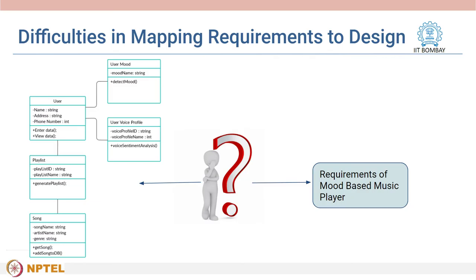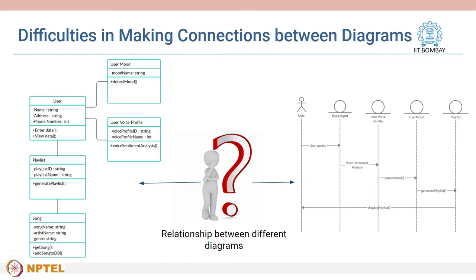Others might find it difficult to understand how certain requirements and parts of the solution design map to each other. For example, how do classes in the class diagram like song similarity relate to the requirement of the mood-based music player? Another difficulty is making connections between diagrams, mainly because each diagram has a large amount of detail. For example, the sequence diagram takes objects from the class diagram and describes its behavior, but students find it difficult to make this connection between the two diagrams.